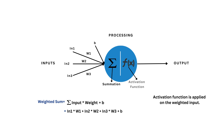Either the neuron fires and passes on the signal to the next neuron, or remains inactive. The activation function introduces non-linearity to the decision-making process, allowing the neuron to capture complex relationships between inputs and outputs, adding flexibility and enabling the neuron to model more sophisticated patterns. We will learn more about activation functions and hyperparameters in the next video.